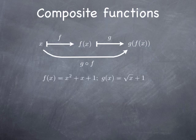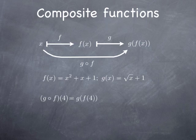For instance, if f of x is x squared plus x plus 1 and g of x is square root of x plus 1, and I want to evaluate the composite function g of f at 4: by definition this is g of f of 4, so I plug 4 into f and obtain 16 plus 4 plus 1, so 21. In other words, I'm evaluating g at 21. If I plug x equal to 21 into g, I get square root of 21 plus 1.